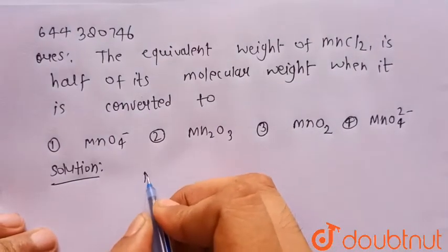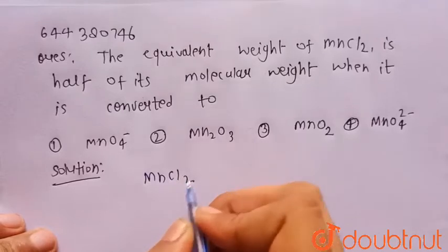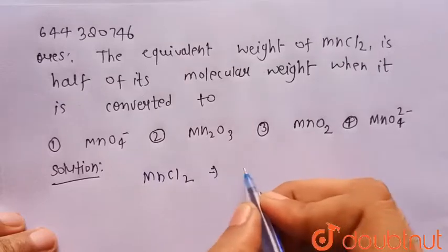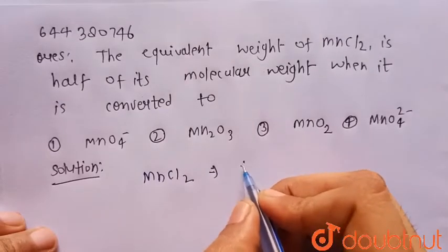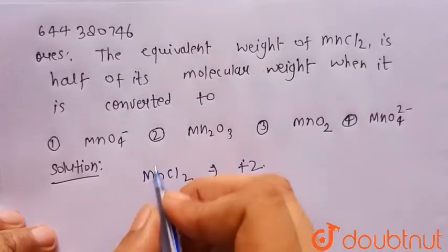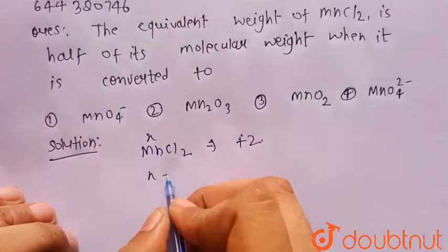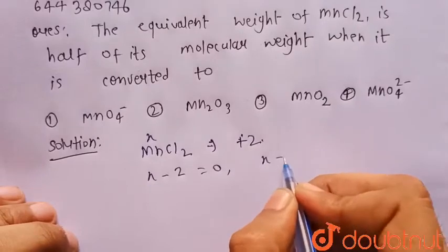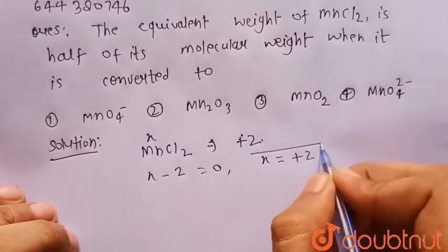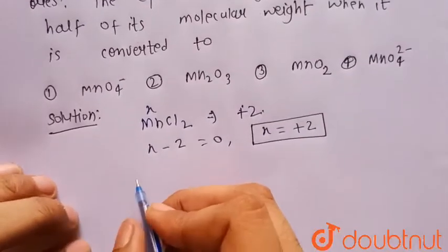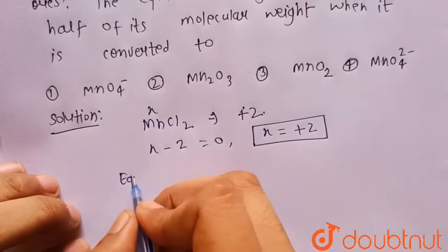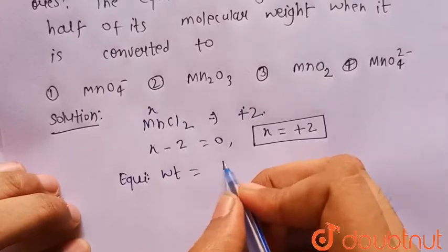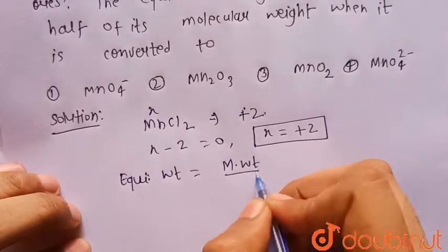Consider manganese chloride, MnCl2. We can clearly see that the oxidation number of manganese is +2. Let x be the oxidation number, then x + 2(−1) = 0, so x = +2. We know that equivalent weight = molecular weight / n-factor.